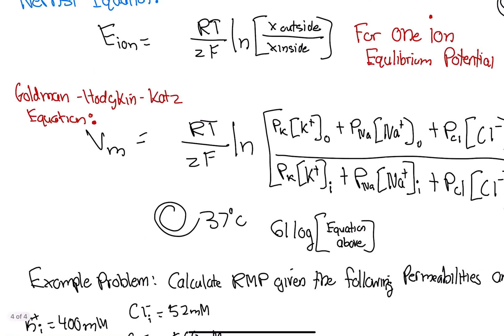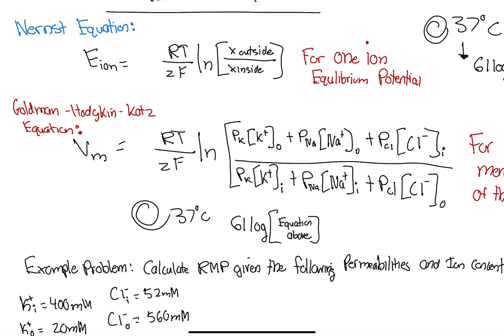So now we have the Goldman-Hodgkin-Katz equation, or known as the Goldman equation. Here's a little tip. If you in the future come up with an equation by yourself, make sure your last name is high in the alphabet, like an A or B or C, because no one calls this the Hodgkin equation or the Katz equation. We all call it the Goldman equation because his last name is the first letter in the alphabet compared to Hodgkin and Katz, H and K.